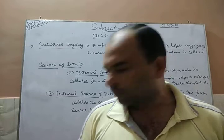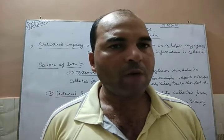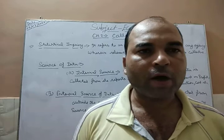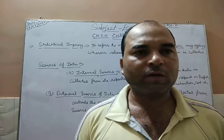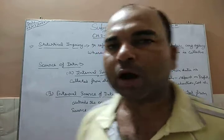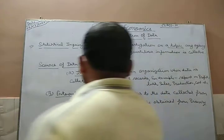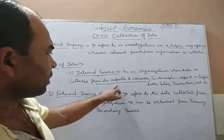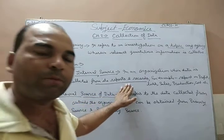For example, suppose a person needs to collect data on the cost and production of a company. A manager is given the task to collect data about production and cost. Which source will be internal? He will go to the production manager and the cost manager within the organization. Internal source of data means when data is collected from its reports and records within an organization — for example, reports on profit, sales, loss, production, cost, etc.